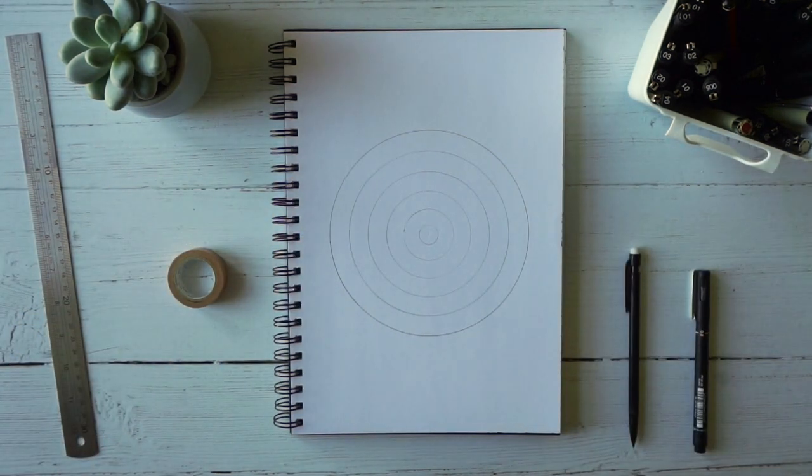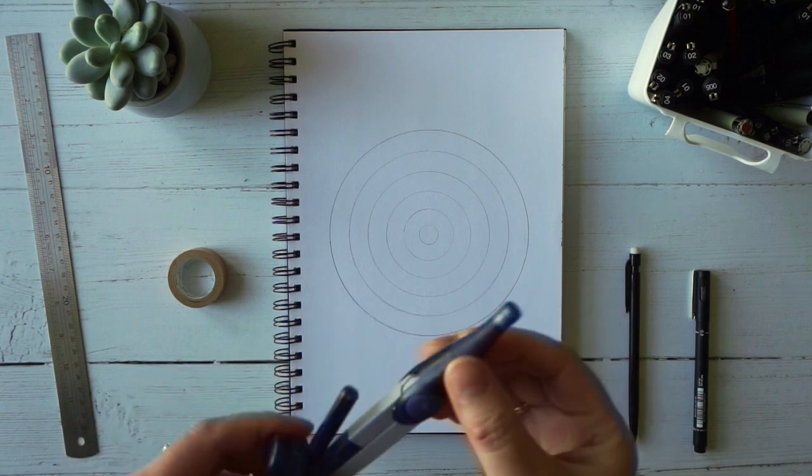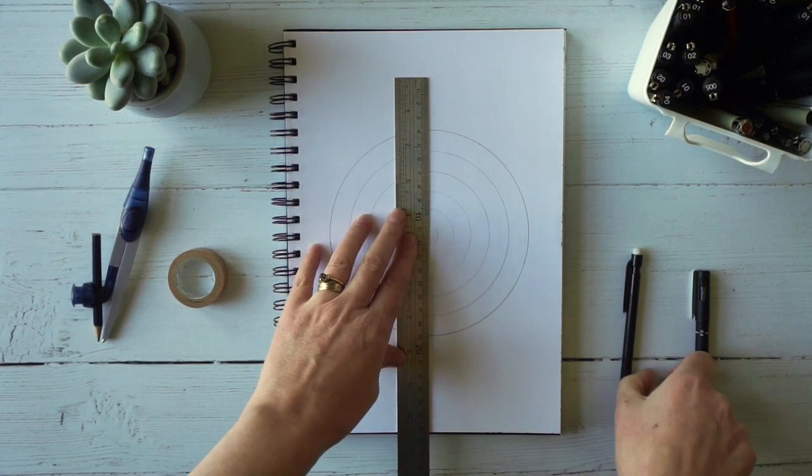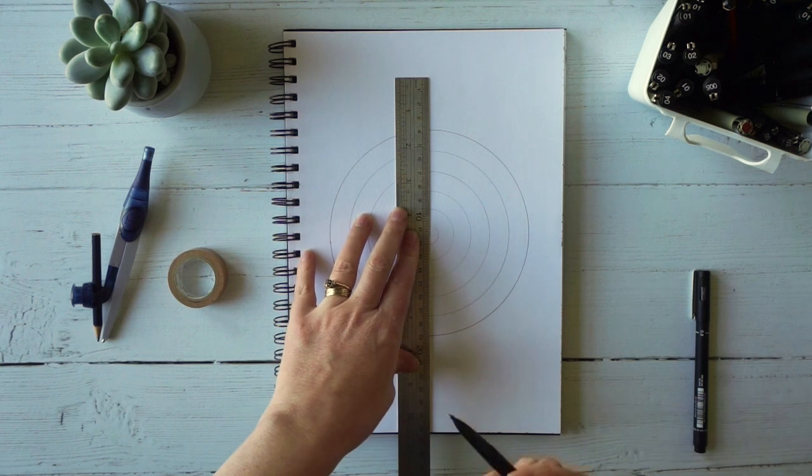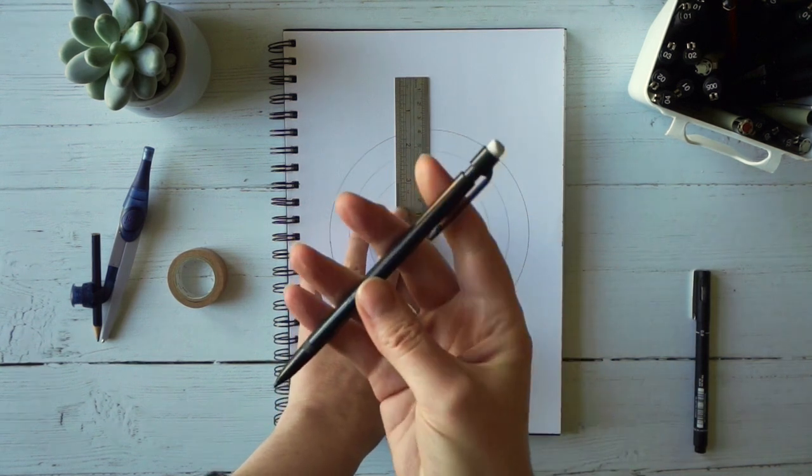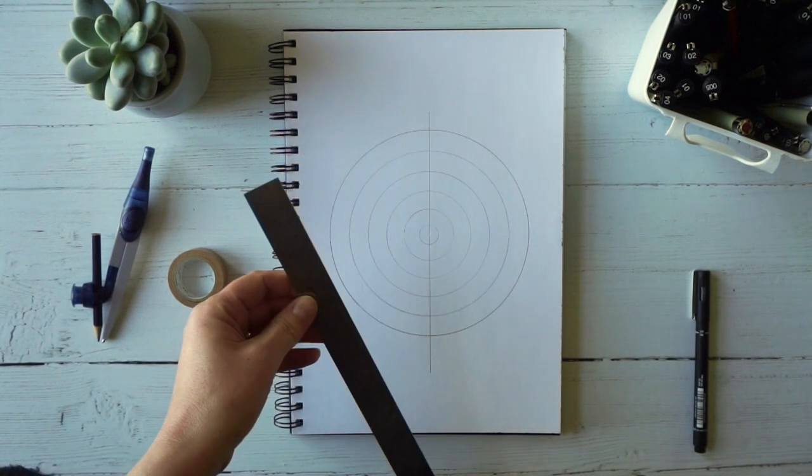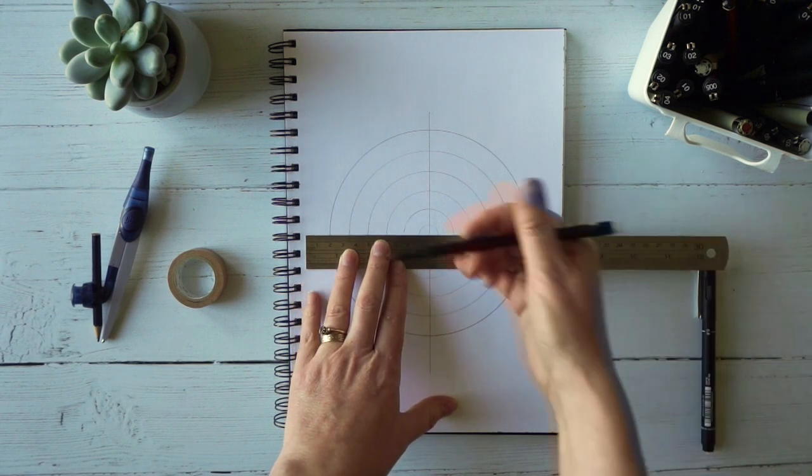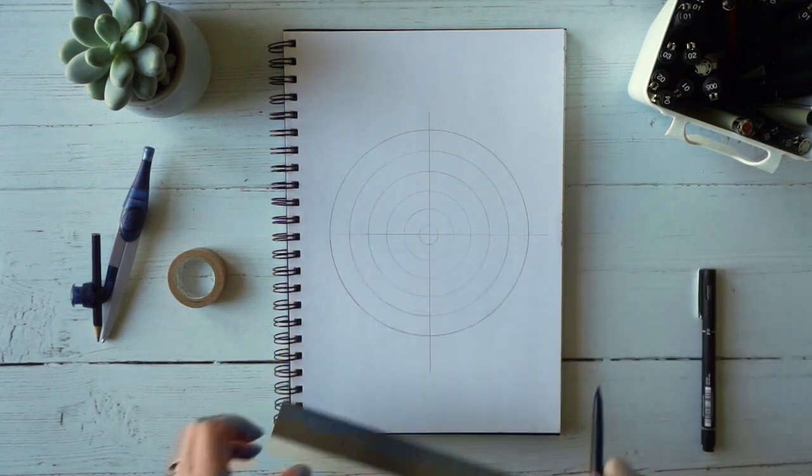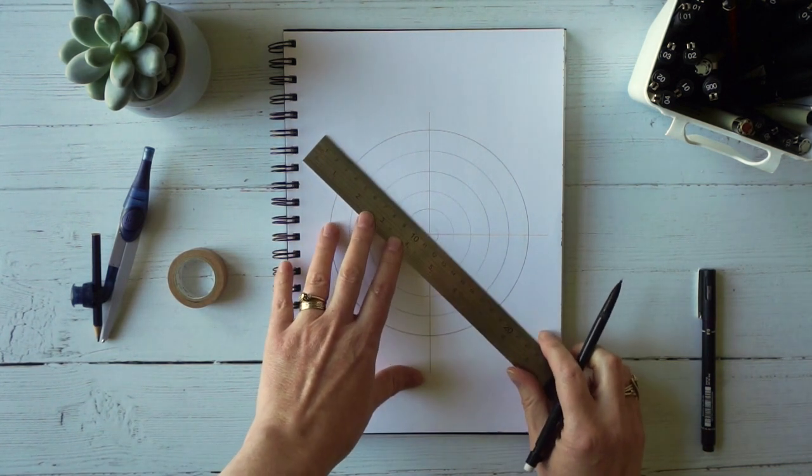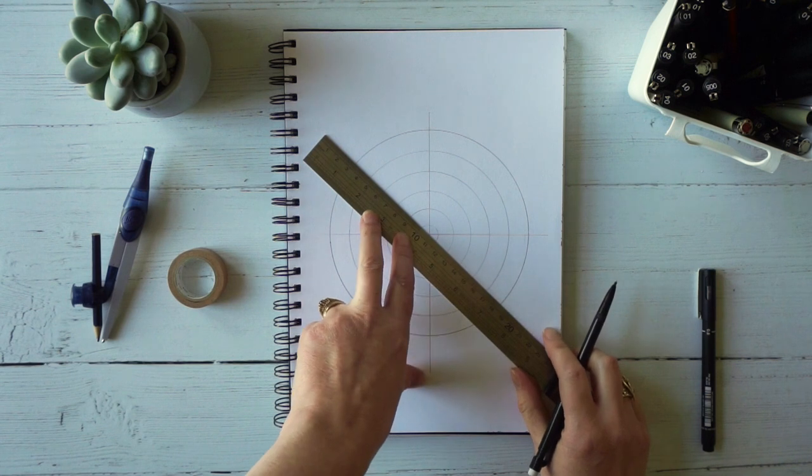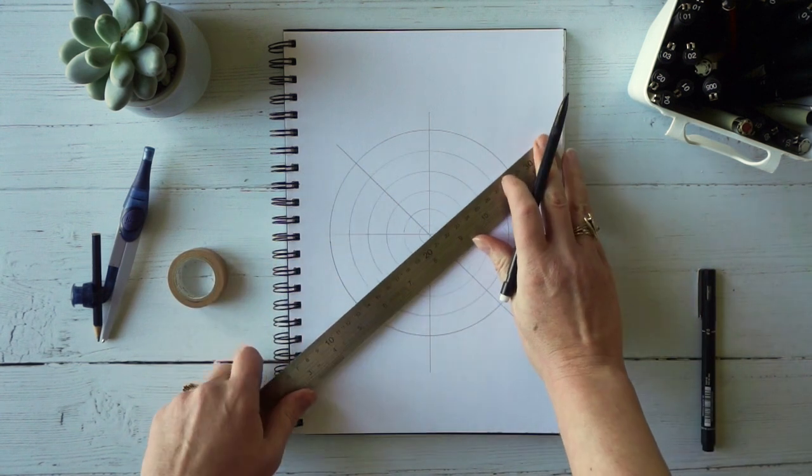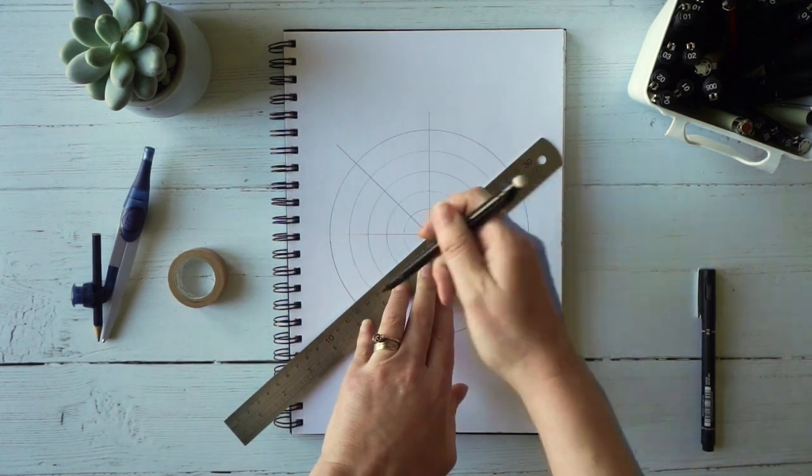You create a little bullseye shape like this, and then I'm going to divide it into eight. I'm going to use my ruler and divide it down the center. I'm just using a pencil because I want to rub the lines out afterwards. Then divide it horizontally, and divide each of those portions into two again. You can measure this if you want to get it exactly right, but I'm not too worried about this one.